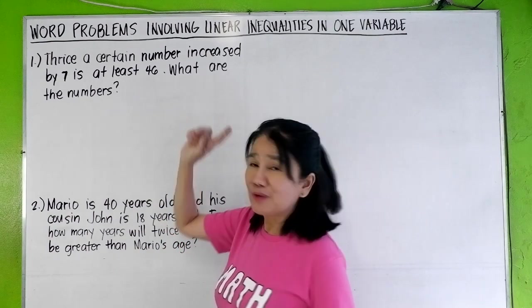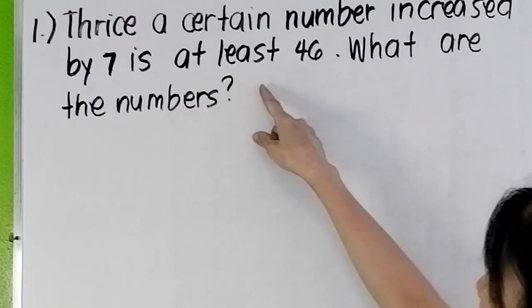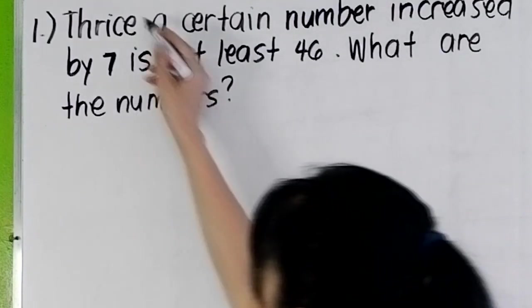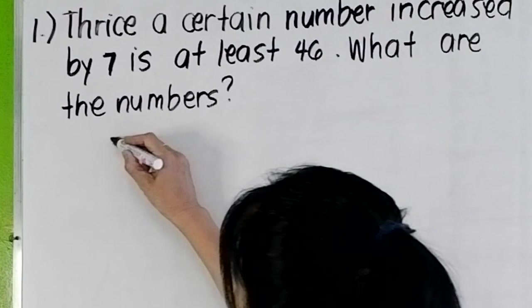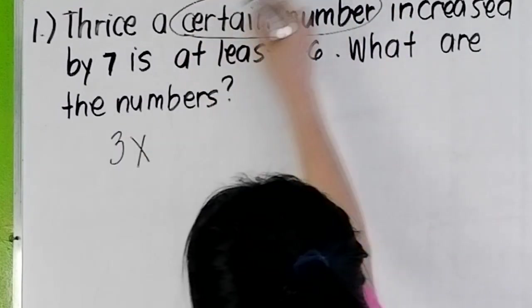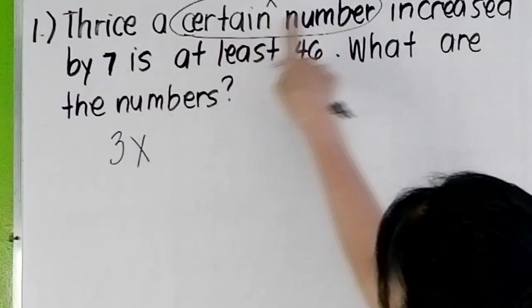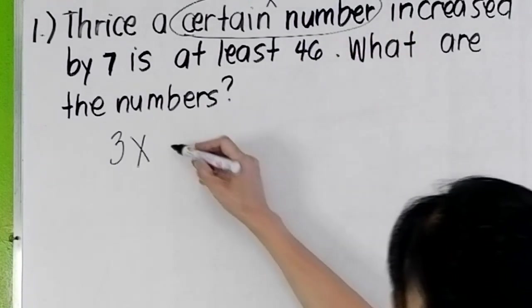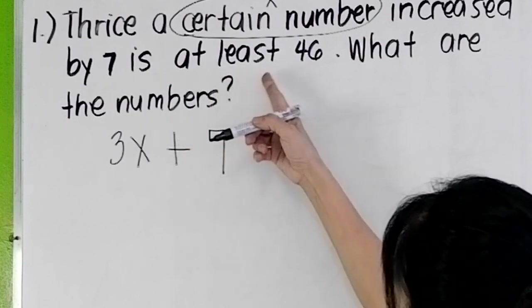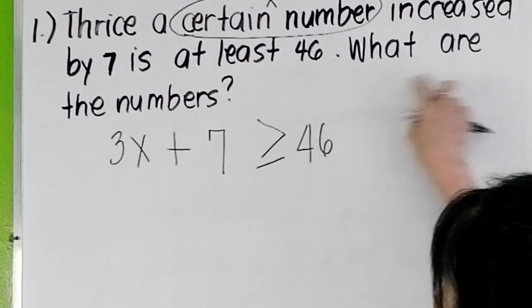Number one problem: thrice a certain number increased by 7 is at least 46. What are the numbers? We have here thrice means three times a certain number, so we let x be the certain number. Thrice a certain number is 3x increased, so plus 7 is at least 46, at least or greater than or equal to 46.